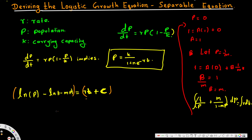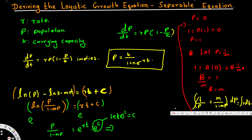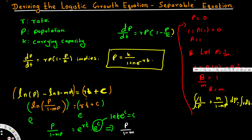Since we have ln(p) minus ln(1 minus mp), using logarithm rules this is equivalent to ln of [p over (1 minus mp)], equal to r·t plus constant. Taking e to the power of both sides, e and ln cancel, giving p over (1 minus mp) equals e^(rt) times e^C. Since e^C is a constant, we call it C, so p over (1 minus mp) equals C·e^(rt).